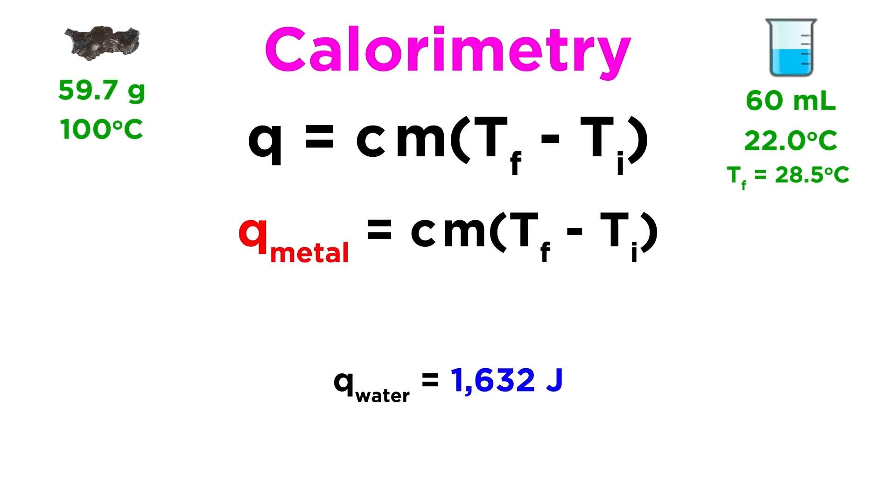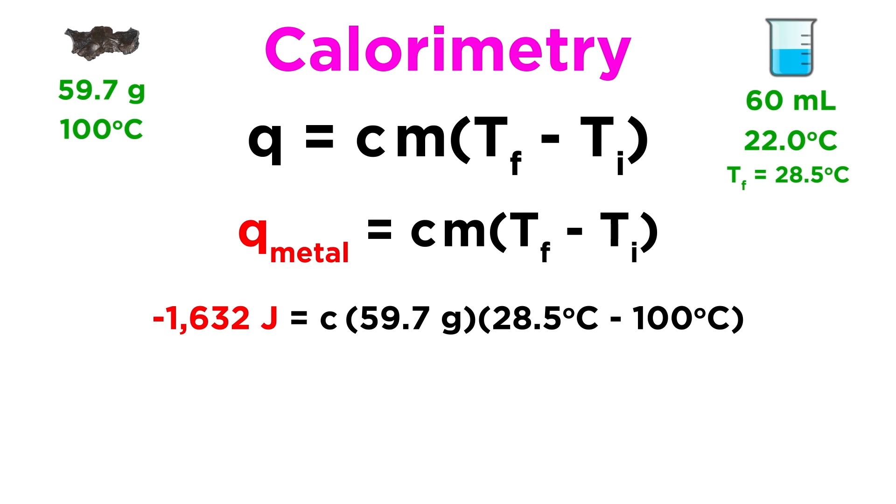Let's also recall that the heat absorbed by the water must be the heat released by the metal, so q metal must be negative 1632 joules, since a positive q means heat absorbed, and a negative q means heat released.